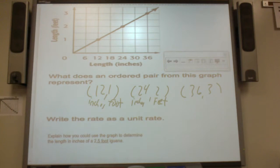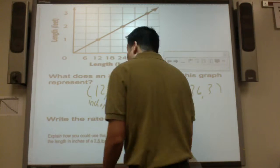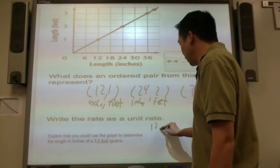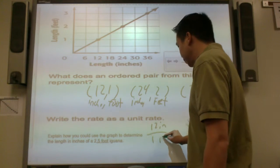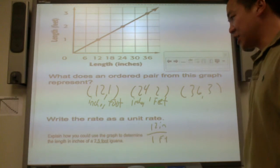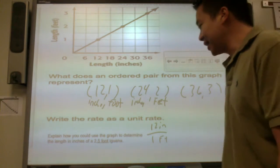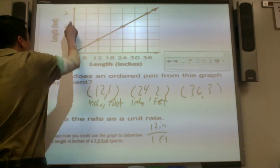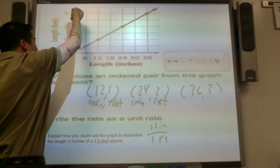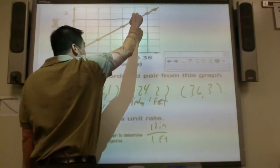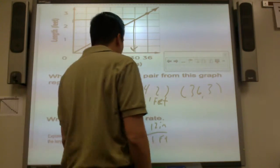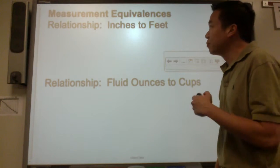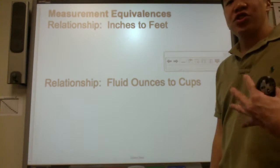Write the rate as a unit rate. A unit rate is when the denominator is 1. So 12 inches per 1 foot. Explain how you could use the graph to determine the length in inches of a 2 1/2 foot iguana. Here's feet. 2 1/2 foot, go right here, follow the line, go down. So it is 30 inches. An iguana is 30 inches.